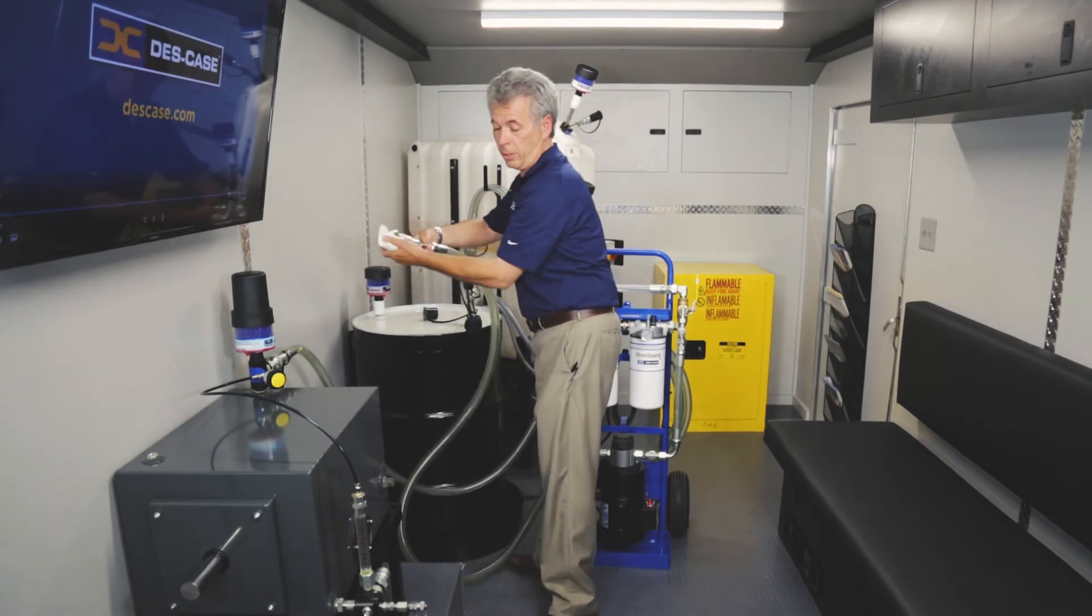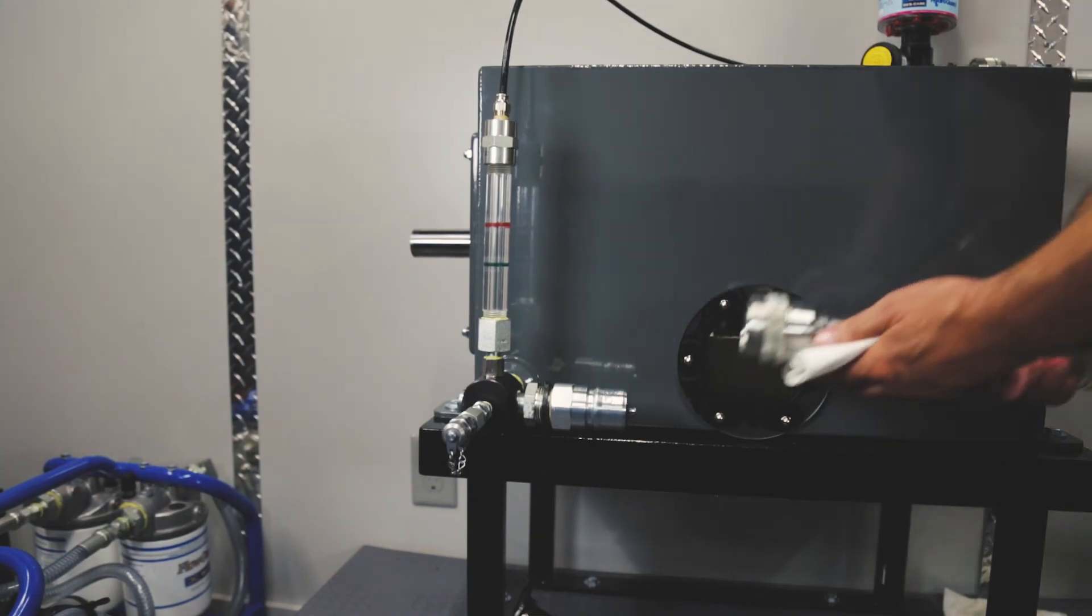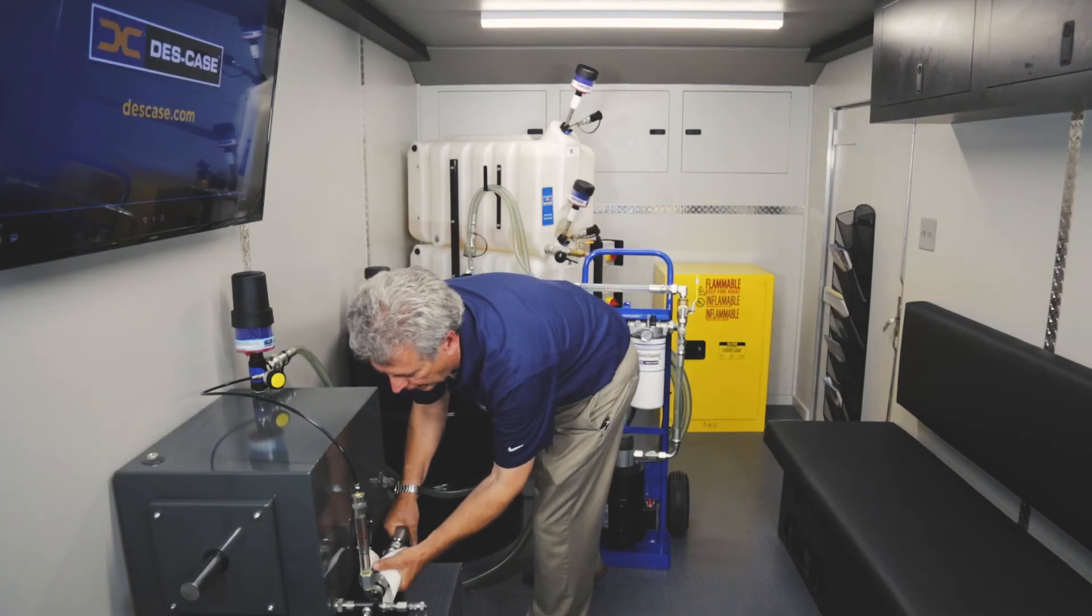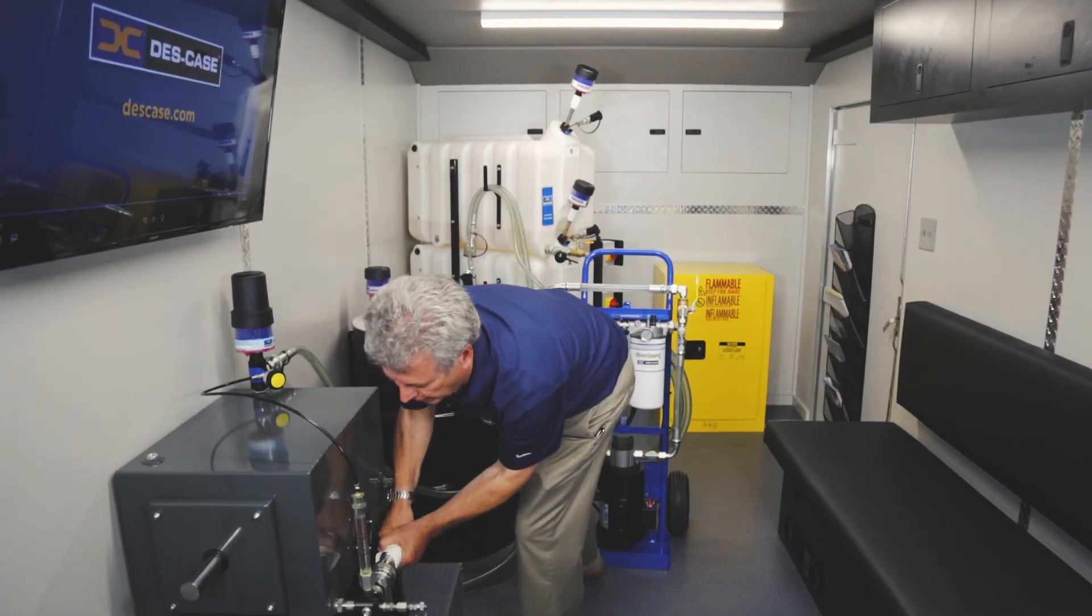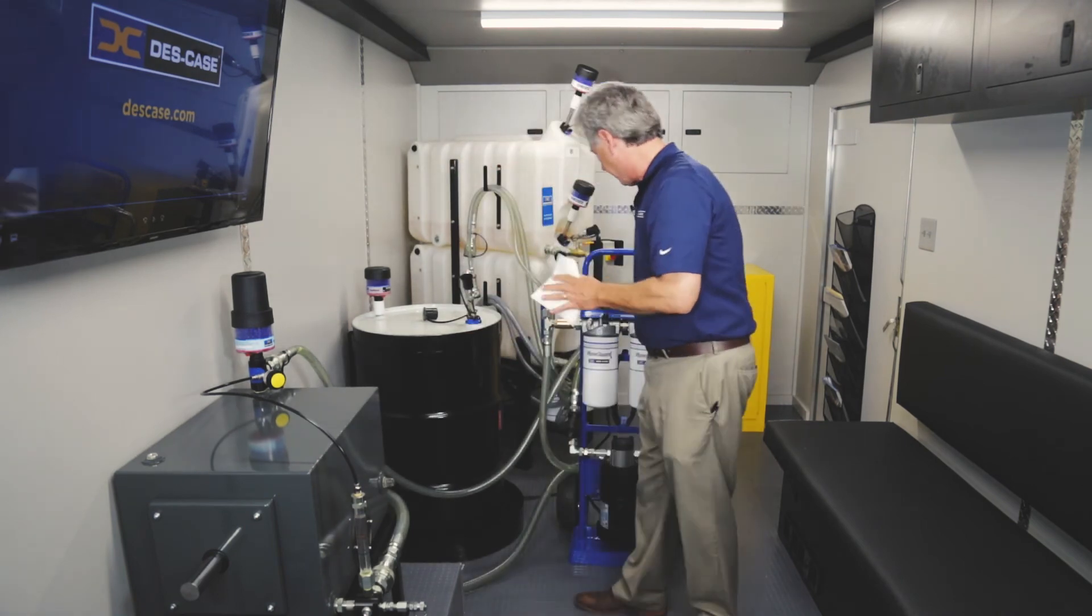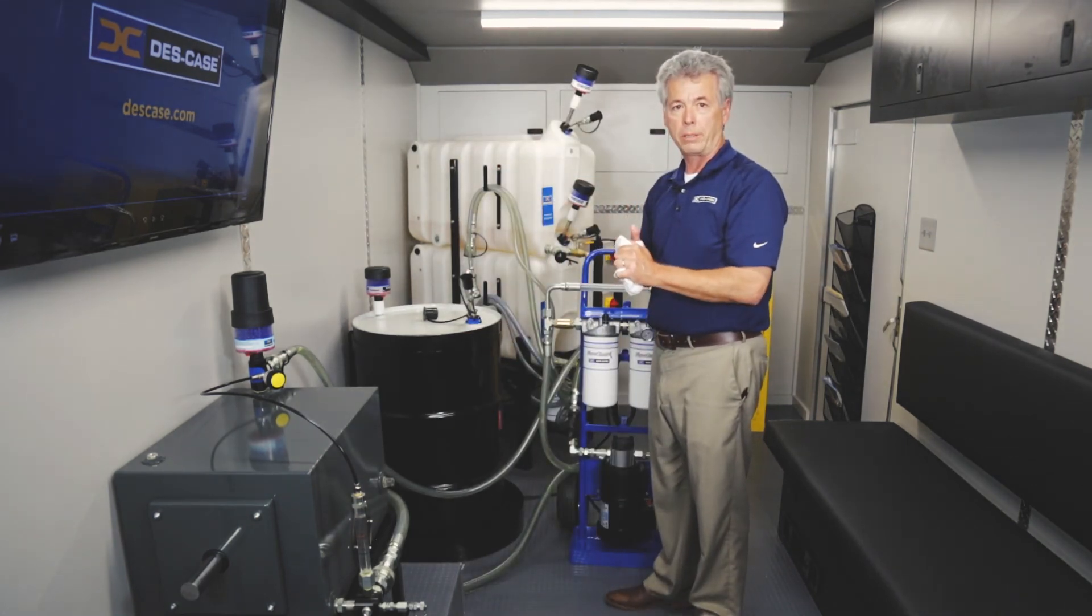We're going to use the same math that we use whenever we filter new oil, and we want to turn it over about 10 times. So with this unit being about 10 gallons and we have a 5 gallon a minute pump, we want to run it for about 20 minutes.